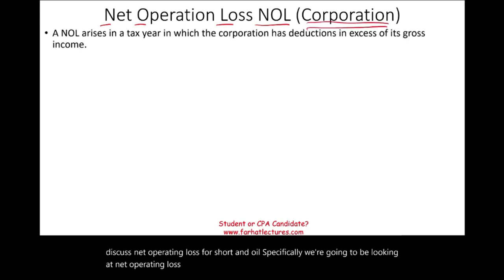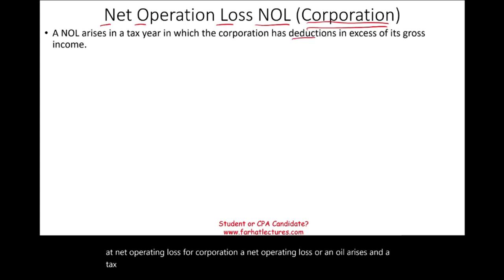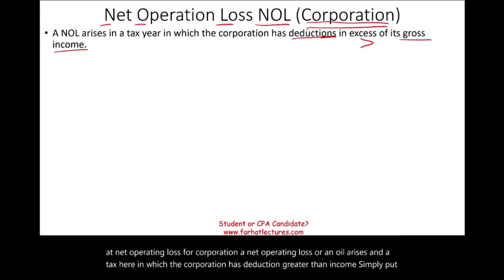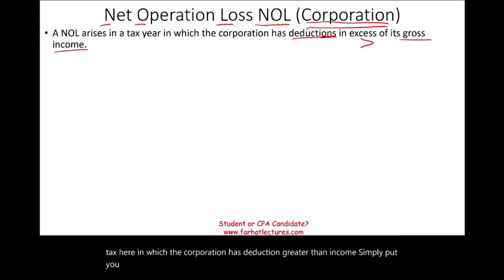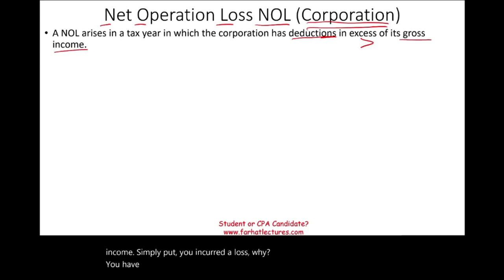A net operating loss, or NOL, arises in a tax year in which the corporation has deductions greater than income. Simply put, you incurred a loss — you have more deductions, more expenses than the income the corporation generated.